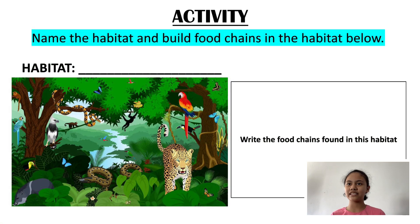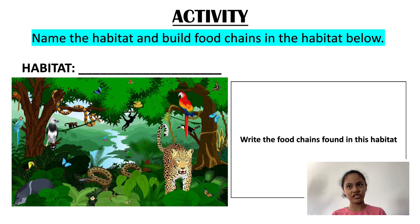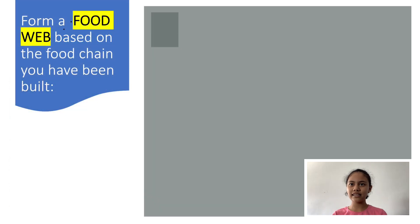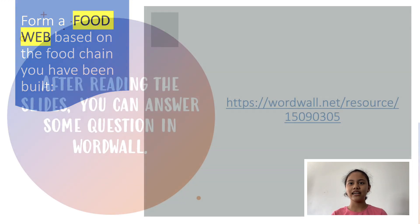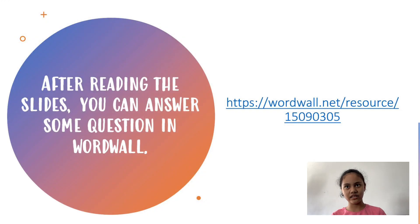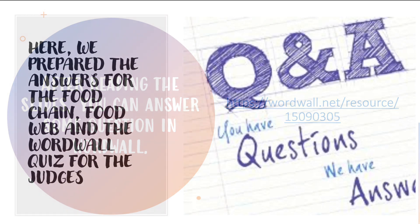We created many activities for you. The first activity is to try to guess the name of the habitat and build food chains. The second activity is to try to form a food web based on the food chains you have built. And the last activity is World War 3.